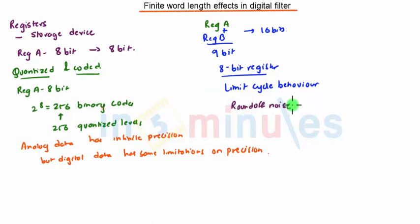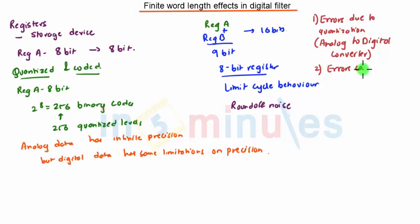There are some finite word length effects. Finite word length effects are caused by, first, errors due to quantization. This can happen in analog-to-digital converters.